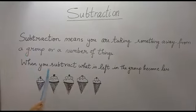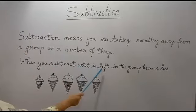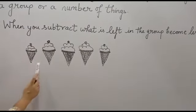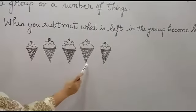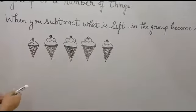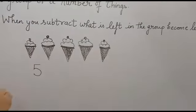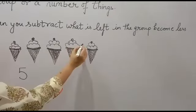When you subtract, what is left in the group becomes less. One, two, three, four, five. There are five ice creams. Suppose you eat two.